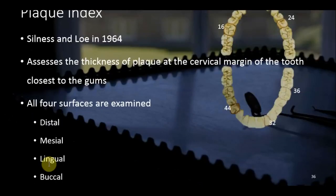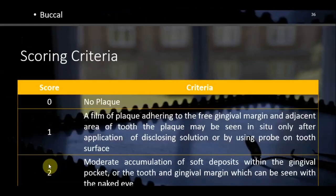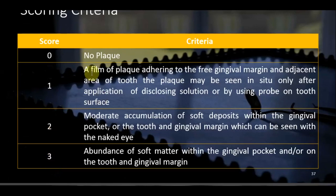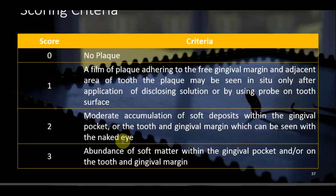The scoring criteria for the Plaque Index: Score 0 is no plaque. Score 1 is a film of plaque adhering to the free gingival margin — visible only after applying disclosing solution. Score 2 is moderate accumulation within the gingival pocket and on the tooth and gingival margin, visible to the naked eye. Score 3 is abundance of soft matter in the pocket and on the gingival margin, also visible with the naked eye.